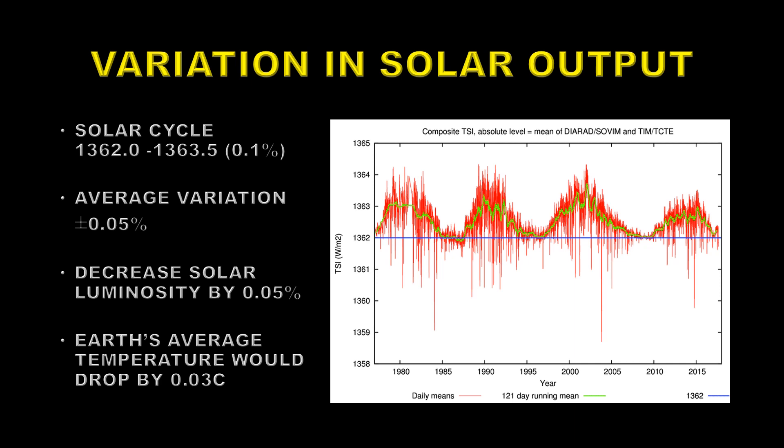So if you went into a grand solar minimum, for example, for an extended period, the luminosity of the Sun would be dropping by about 0.05 percent. Now if you plug that into the previous formula, that translates to a change in the temperature of the Earth of 0.03 degrees centigrade. So a negligible change.